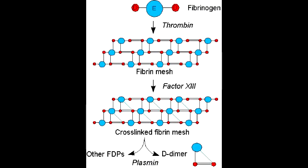What is D-dimer? D-dimer is a fibrin degradation product — a small protein fragment present in the blood after a blood clot is degraded by fibrinolysis. Name some conditions with high levels of D-dimers: DVT (deep vein thrombosis), pulmonary embolism, and DIC (disseminated intravascular coagulation).